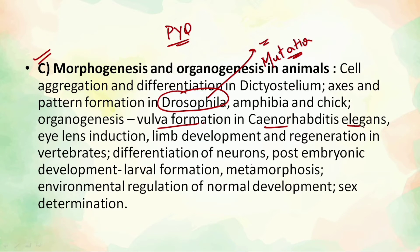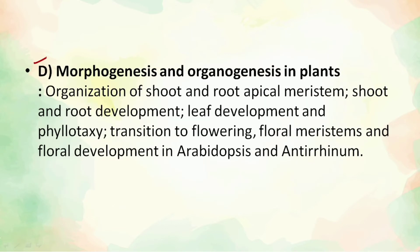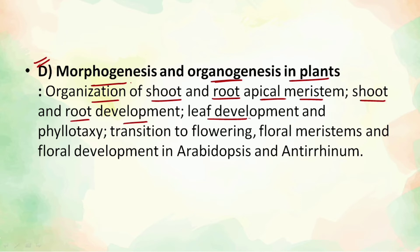The most important topics you must cover are Drosophila, vulva development in C. elegans, and prevention of polyspermy — which is a small topic you can cover within one or two hours. We also have sex determination, which is very important. For plant morphogenesis and organogenesis, the syllabus includes organization of shoot and root apical meristem, root and shoot development, leaf development, phyllotaxy, transition to flowering, floral meristems, and the ABC model of flower development.